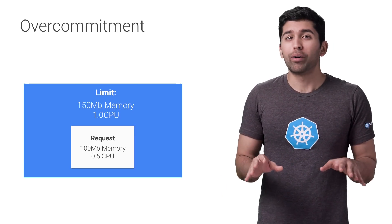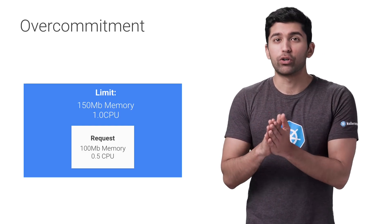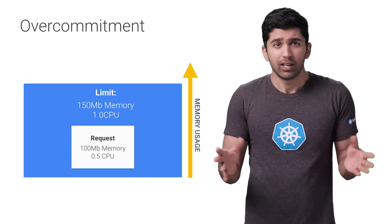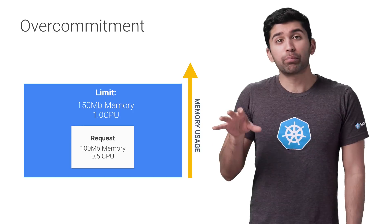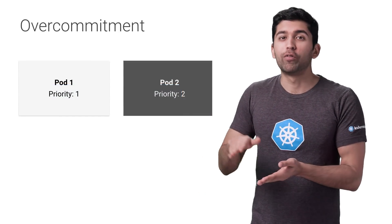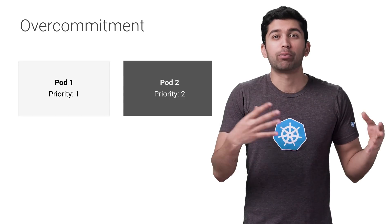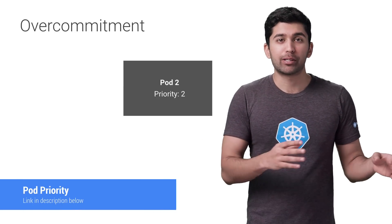When a machine is running out of memory, Kubernetes looks for pods that are using more resources than they requested. Containers with no requests at all are prime candidates for termination since they requested nothing. Containers that have gone over their requests but are still under the limit are also candidates. If multiple pods have gone over their requests, Kubernetes ranks them by priority and terminates the lowest priority pods first. If all pods have the same priority, it terminates the ones that have gone the most over their request. In rare scenarios, Kubernetes might terminate pods still within their requests if critical system components like the Kubelet or Docker start taking more resources than were reserved for them.